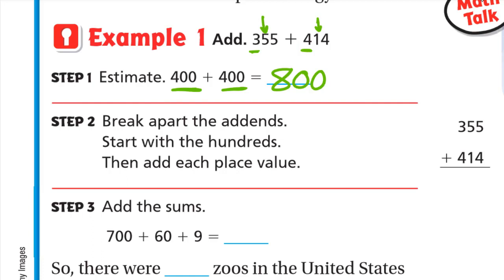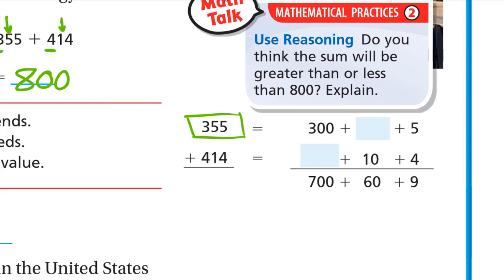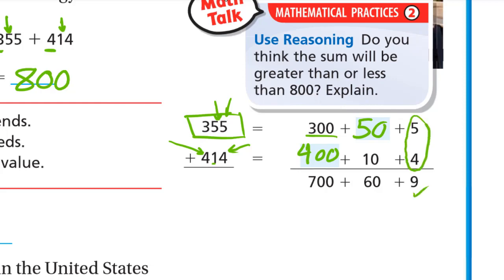Step two: break apart the numbers, starting with hundreds, then add each place value. For 355: the 3 is at hundreds so it's 300, the 5 is at tens so it's 50, and the other 5 is at ones so we keep it 5. For 414: the 4 is at hundreds so it's 400, the 1 at tens is 10, and the 4 at ones stays 4. Now add the ones: 5 plus 4 is 9; tens: 50 plus 10 is 60.